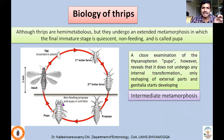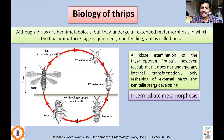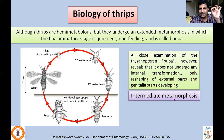They look like holometabolous insects — insects with complete metamorphosis — but a close examination of the thysanopteran pupa reveals that it does not undergo any internal transformation; only reshaping of external parts occurs and genitalia start developing. That is why they are still placed under the hemimetabolous group, but because this pupa-like stage is observed, they are considered to undergo a separate type called intermediate metamorphosis — in between hemimetabolous and holometabolous.